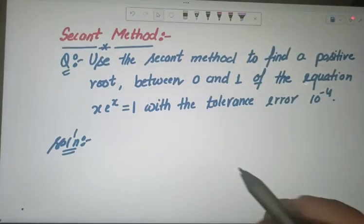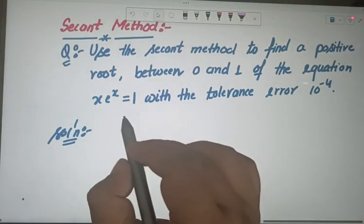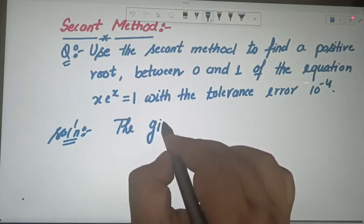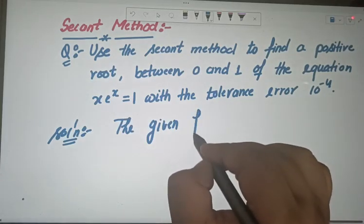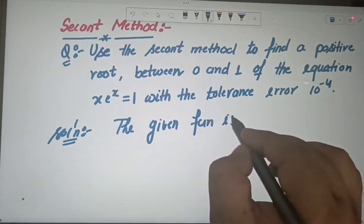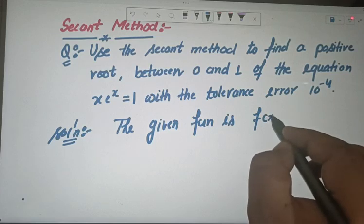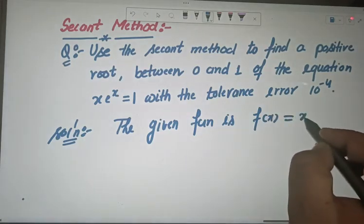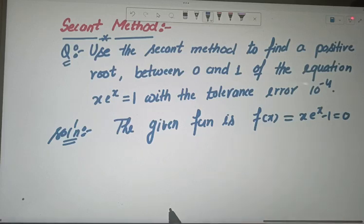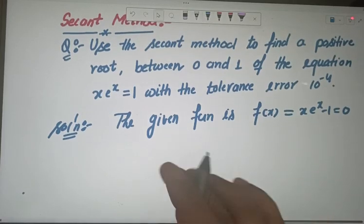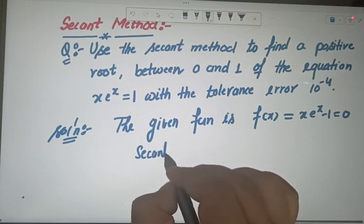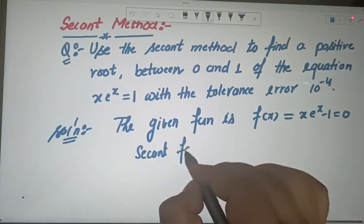Now, how will we proceed? What about the formula? The given function is f(x) = x·e^x − 1 = 0. It's very easy to manipulate. And what about the secant formula?